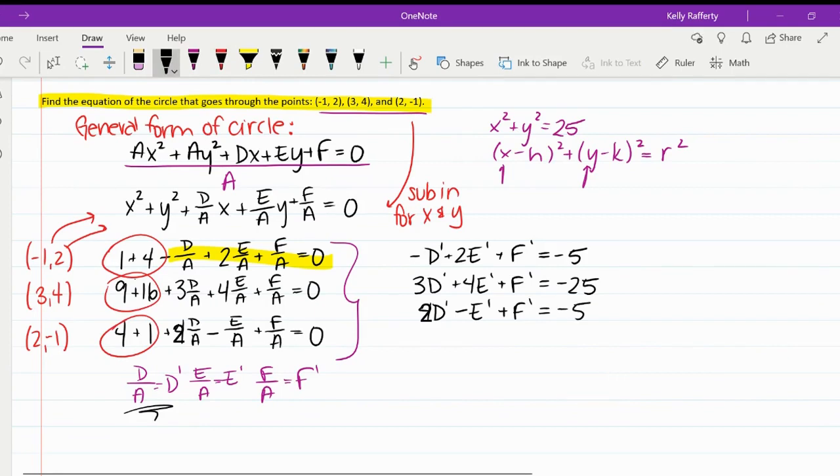So this is a system with three variables, D, E, and F, that represent those fractions. And now I can create an augmented matrix. And I could solve this using Gaussian elimination, but I'm going to use my calculator.